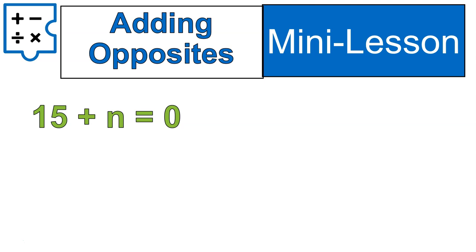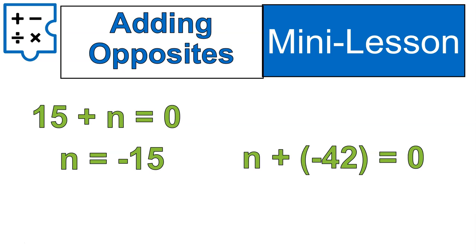Let's practice with a couple of questions. 15 plus a number n is equal to zero — what is our number? N is equal to negative 15. Notice we're still adding opposites to equal zero; we've just put in a variable. Try this one out: n plus negative 42 is equal to zero. Our number n is equal to positive 42, because 42 plus negative 42 is equal to zero.